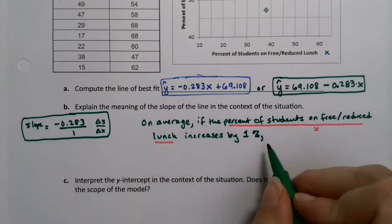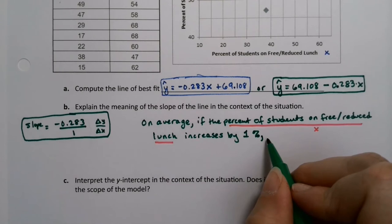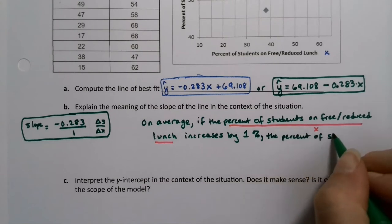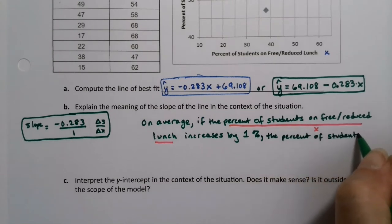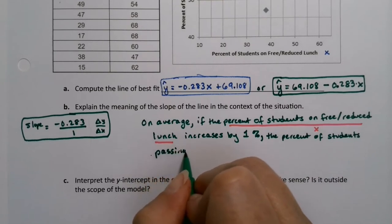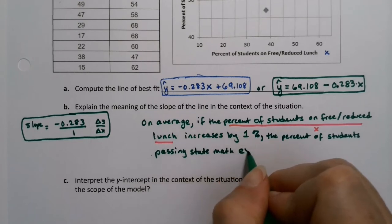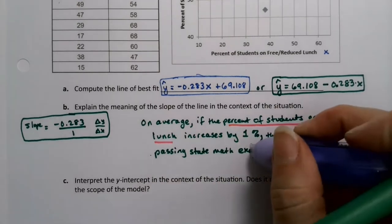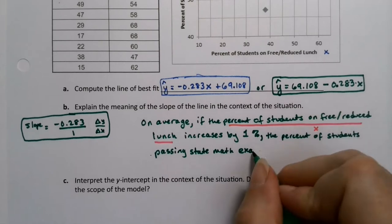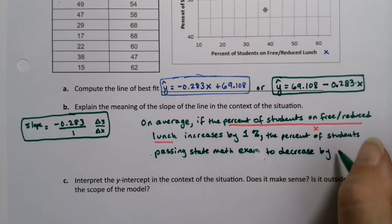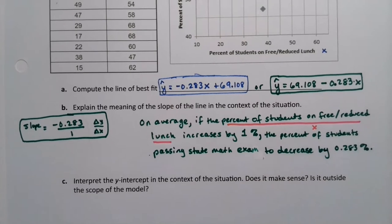then the percent of students passing the state math exam, because that's all the y values. I said y, so I wrote my exam. To decrease by 0.283%, because it's a percent.